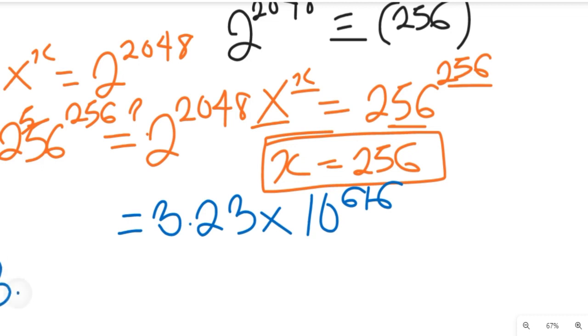That gives me 3.23 times 10 to the power of 616. So you see, this side, the left-hand side is equal to the right-hand side.